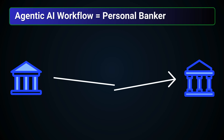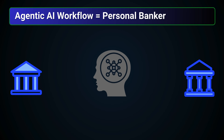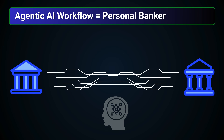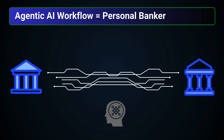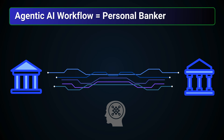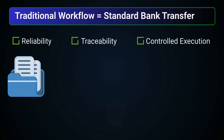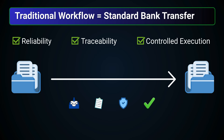An agentic AI workflow, by comparison, resembles a personal banker who is empowered to determine how the transfer should occur based on patterns or optimizations it identifies. While that level of autonomy can be valuable in many domains, it also introduces variability, such as alternative routing choices, additional steps, or behaviors that may be harder to audit or justify after the fact. Because data movement requires reliability, traceability, and controlled execution, the traditional workflow model remains the preferred approach for Maladu when dealing with data transfer processing.